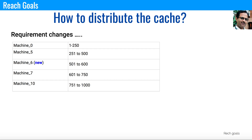In consistent hashing, we don't want to change all the keys or all the values in different cache servers. It is only changed for specific servers where there is minimum impact. There is a little bit of formula behind that, and you can see that in the next screen.